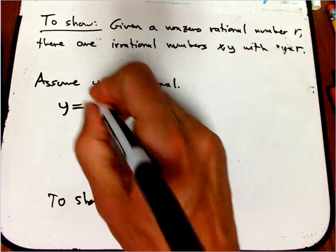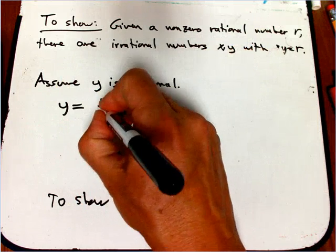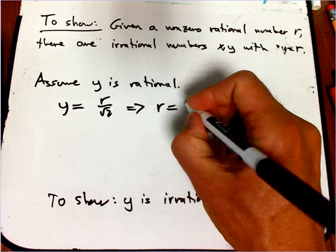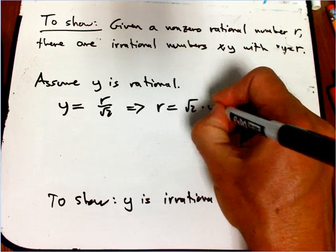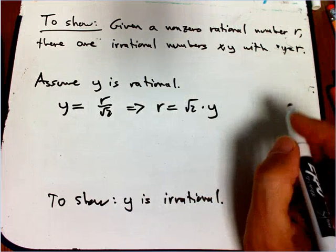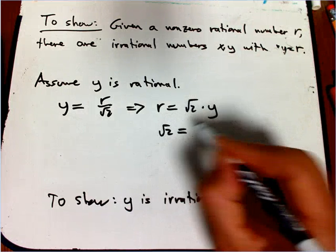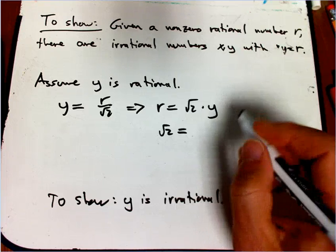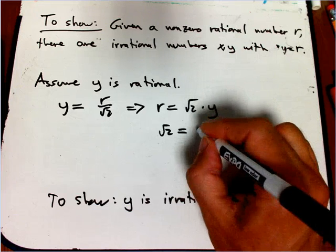But remember, Y was R over root two. So that certainly says that R is root two times Y. Or root two is equal to R divided by Y.